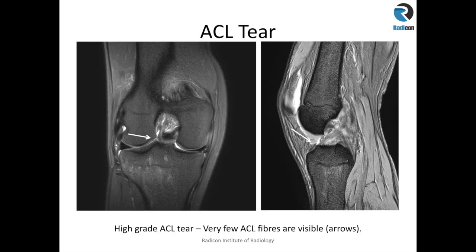Here is a case of a high grade tear of the ACL. You can see the ACL is quite attenuated and demonstrating signal change within it. On the same patient in the sagittal images, you can see the ACL fibers are redundant — they are slightly horizontal in appearance and of abnormal signal intensity. That is the case of a high grade tear.